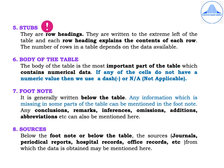We have stubs. Stubs is an important one-marker. They are row headings. They are written to the extreme left of the table and each row heading explains the contents of each row. The number of rows in a table depends on the data available.